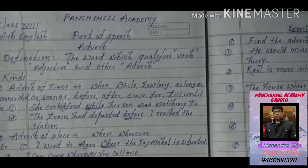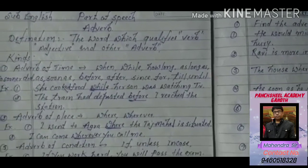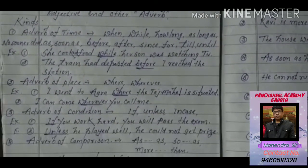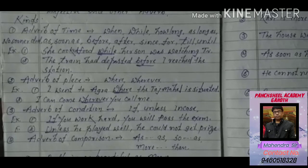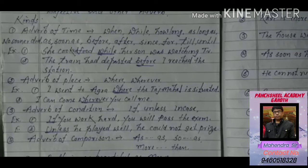The second part of adverb is adverb of place. Adverb of place means the word which indicates place in a particular sentence. These words are 'where' and 'wherever.' For example: I went to Agra where the Taj Mahal is situated — here, 'where' indicates the place Agra. Second example: I can come wherever you call me — here, 'wherever' indicates any place the person wants to call that character.